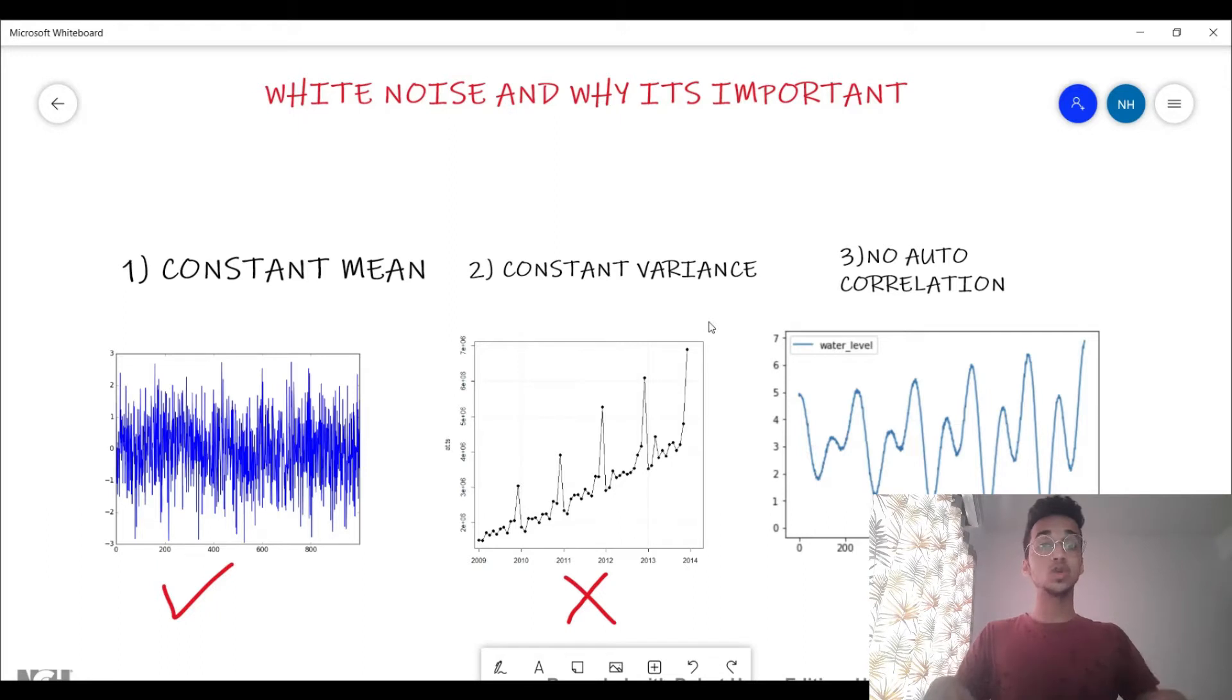The reason it's so important is that if you're doing any time series modeling project and you want to make predictions in the future, the moment you recognize that a particular time series is white noise, that is where you abandon the project because it is impossible to forecast values for that series in the future.